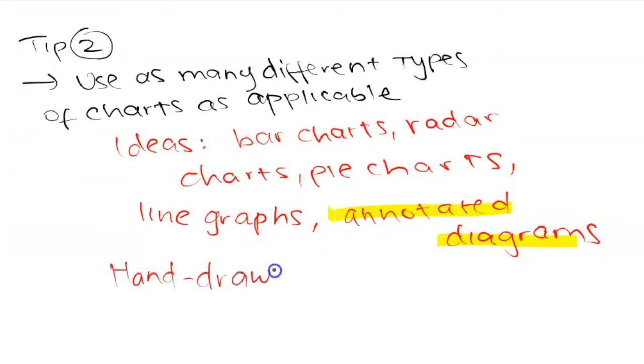My next tip is to use as many different types of charts as possible. So bar charts, radar charts, pie charts, line graphs, but make sure that they're applicable, that they're relevant. So if you're going to use a line graph, it doesn't really make sense unless you clearly have an independent and dependent variable and you're trying to find a correlation between the two.